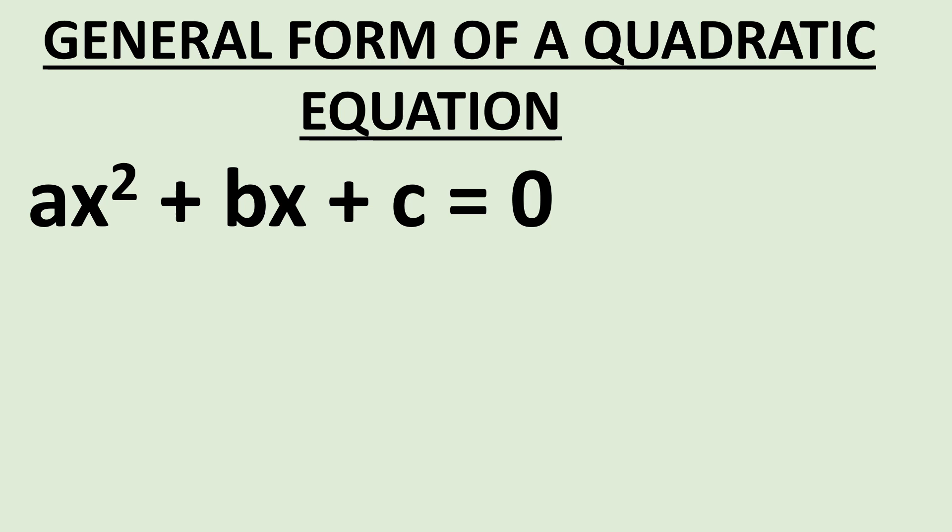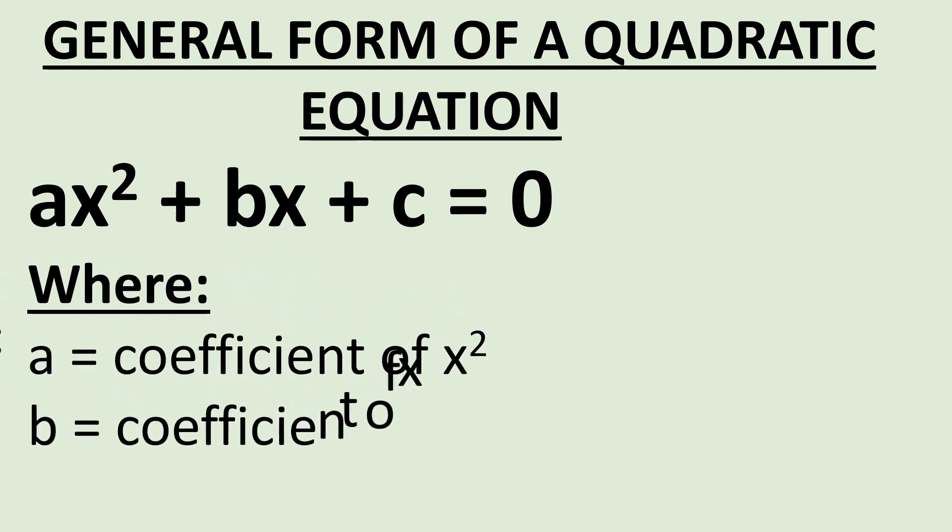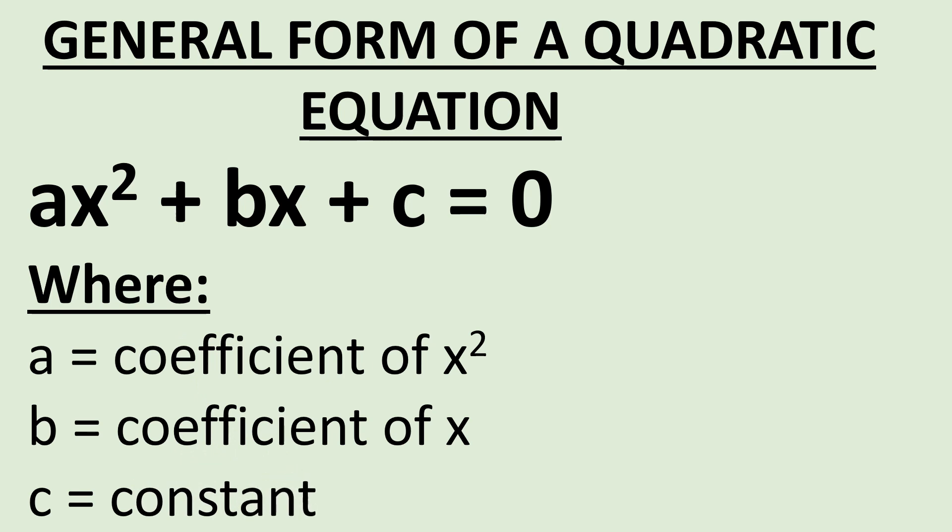In the general quadratic equation ax squared plus bx plus c equals 0, a is the coefficient of x squared, b is the coefficient of x, and c is a constant. When we say coefficient, we mean what is multiplying x squared — that is a — and what is multiplying x — that is b.